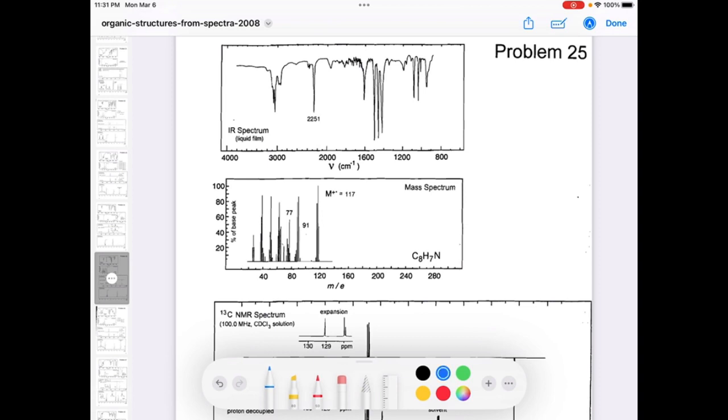The molecular formula is given as C8H7N with nitrogen. Let's calculate the degree of unsaturation. The formula is X plus 1 minus Y minus number of nitrogen by 2, so X is the carbon number 8 plus 1.